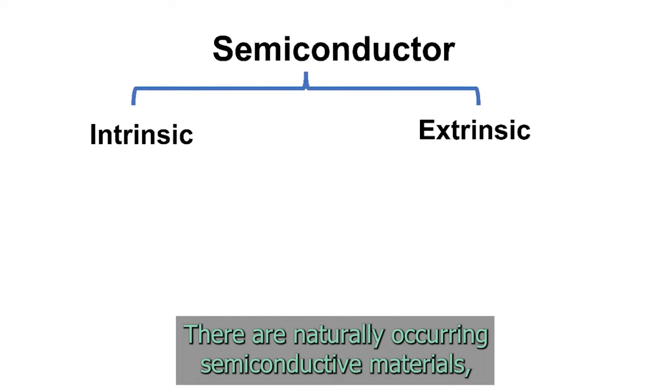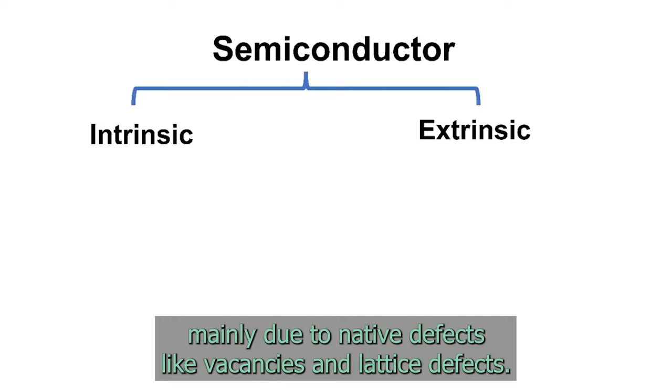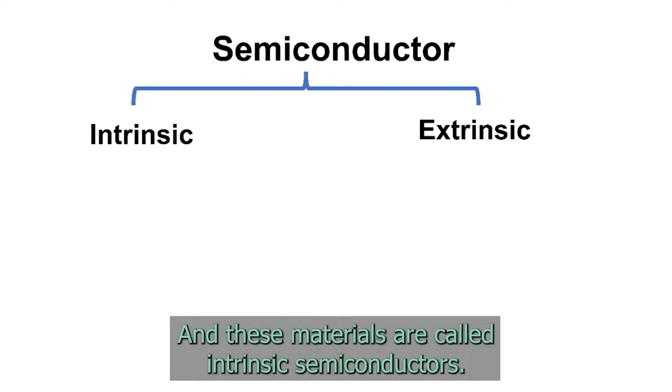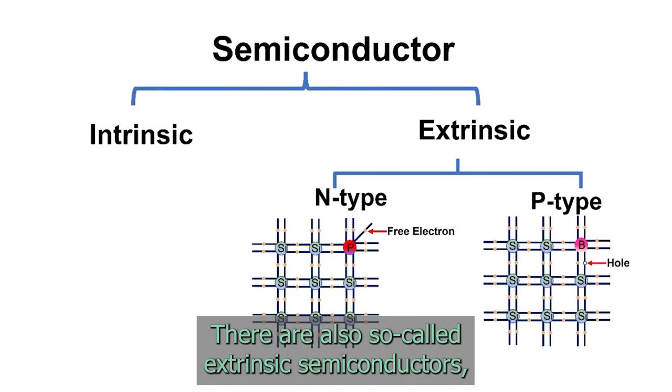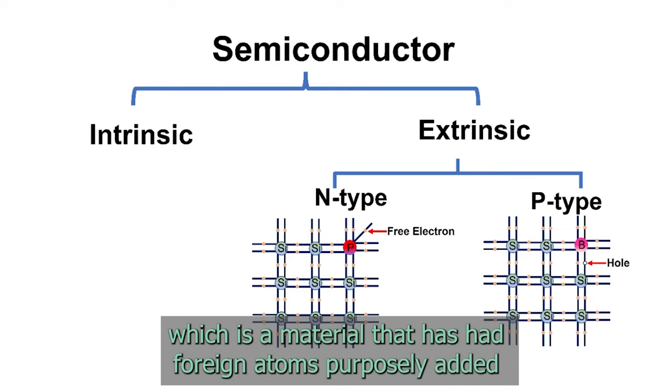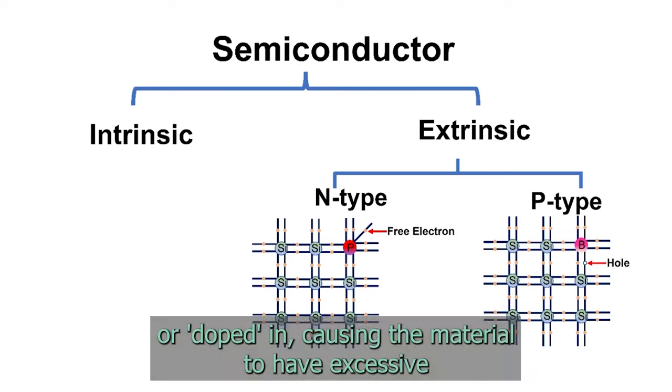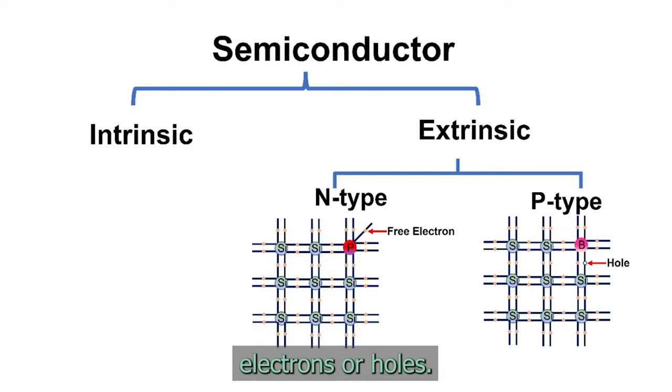There are naturally occurring semiconductive materials, mainly due to native defects like vacancies and lattice defects, and these materials are called intrinsic semiconductors. There are also so-called extrinsic semiconductors, which is a material that has had foreign atoms purposely added or doped in, causing the material to have excessive electrons or holes.